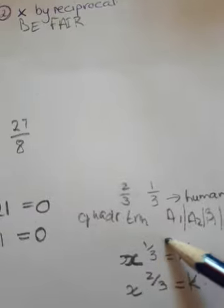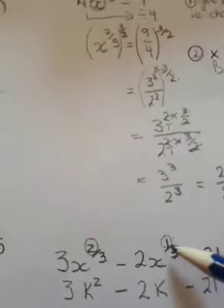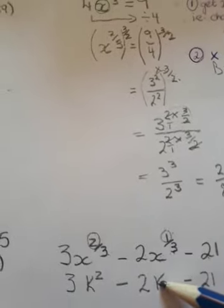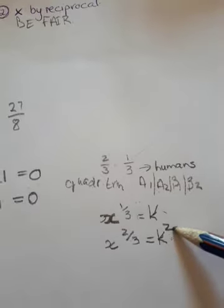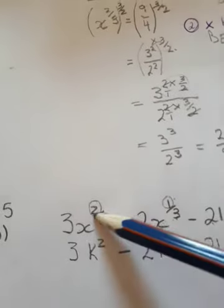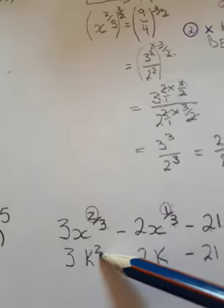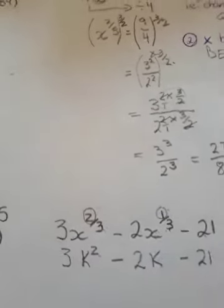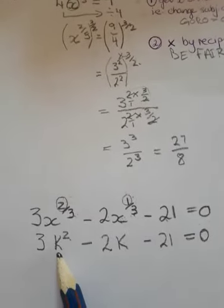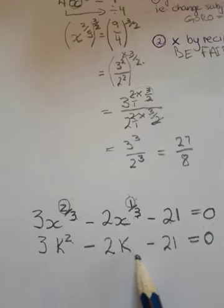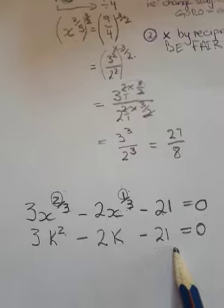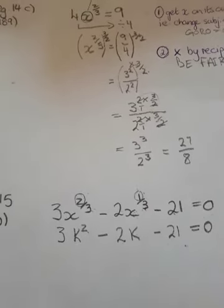We assume that x to the power of 1 third is k, so instead of x to the power of 1 third we write k, and x to the power of 2 thirds is k squared — that's why we made x to the power of 2 thirds equal to k squared. So if you now look at 3k squared minus 2k minus 21, this is quite easily factorized.